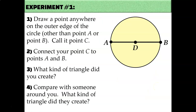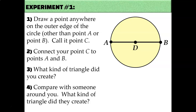I'd like you to start with an experiment. Given circle D with diameter AB, draw another point somewhere on the circle. Remember, the circle is actually just the black ring around the outside, so don't draw C inside the yellow area — that's the area of the circle. Draw point C somewhere on the circle itself. Then connect A to C and B to C and see what you've created. It should be a triangle. What kind of triangle did you create? You can try this multiple times by putting multiple point C's anywhere on the circle. Pause the video and try it now.